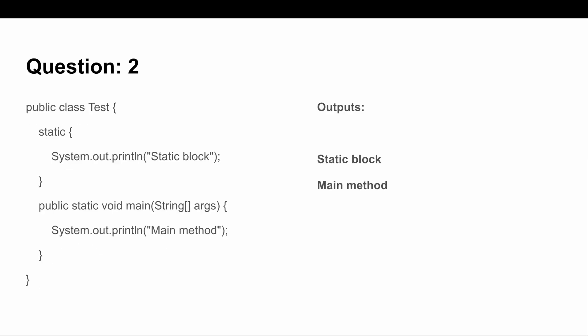The next question is related to the static block. We have statement one in a static block and another in the main method. The question is which will execute first. We know that the main method is the entry point of a Java program, but before the main method the static block executes. So the order of execution is: static block prints first, then the main method prints.